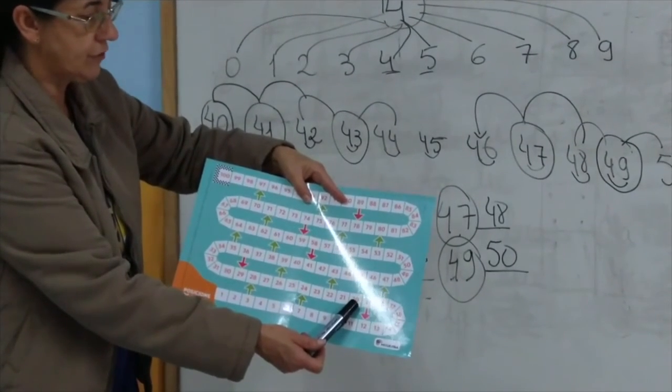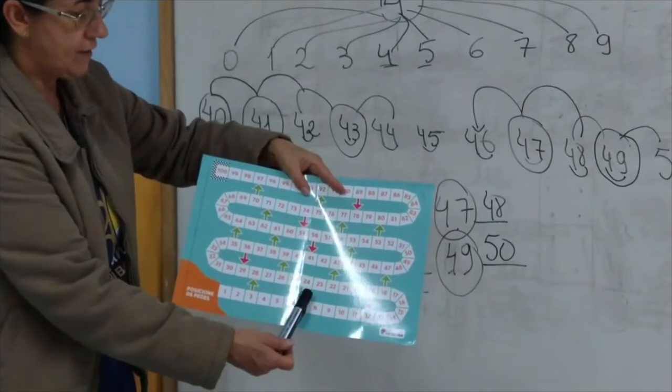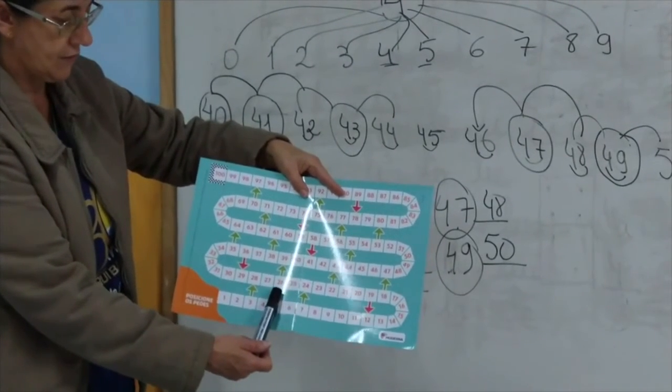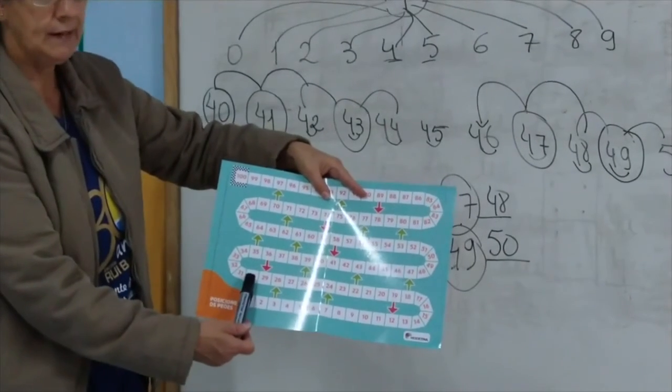20, família do 20: 20, 21, 22, 23, 24, 25, 26, 27, 28, 29, 30.